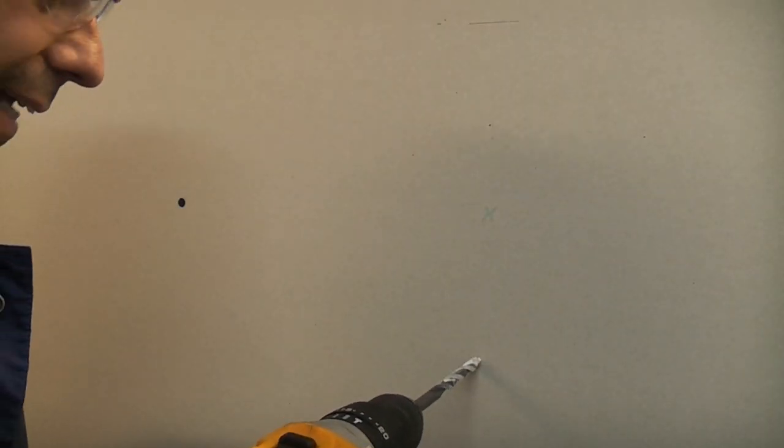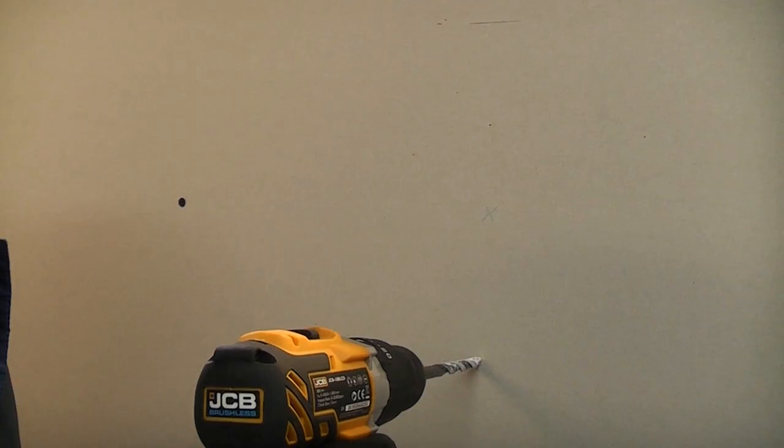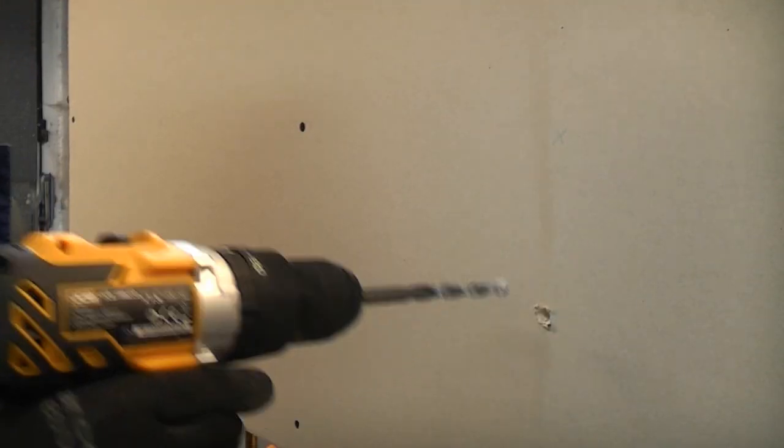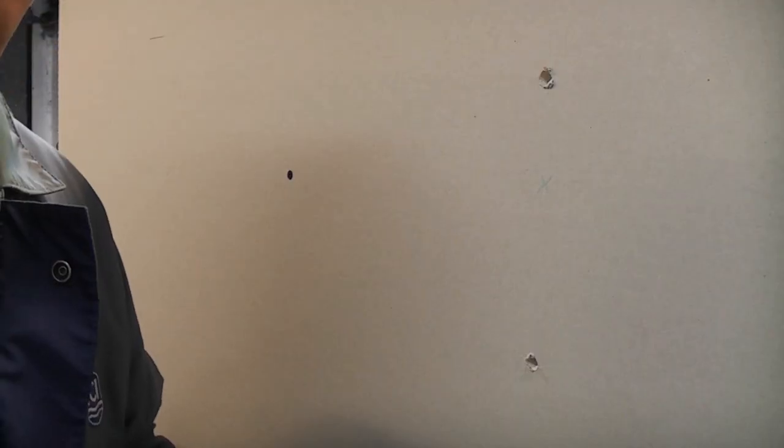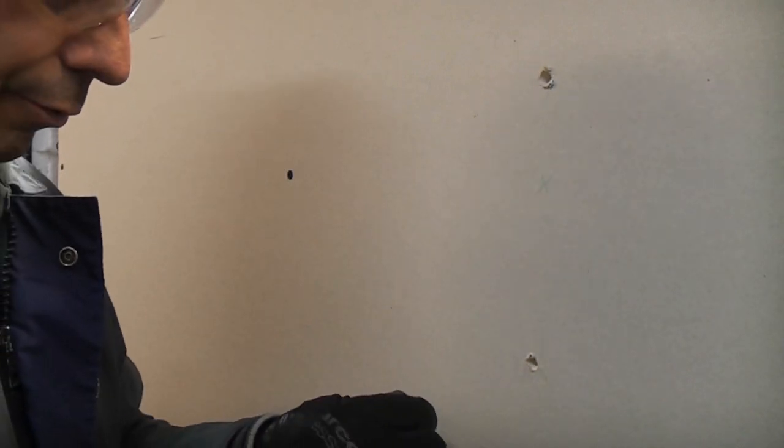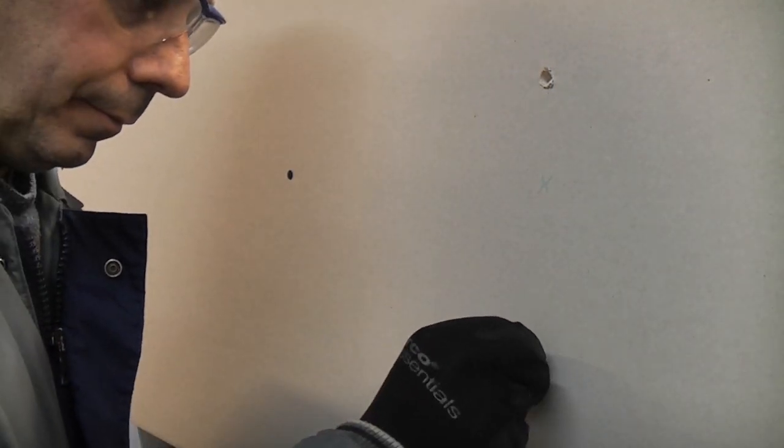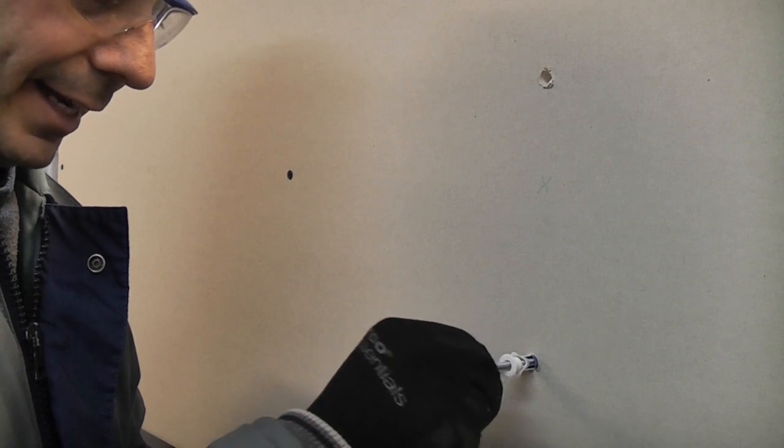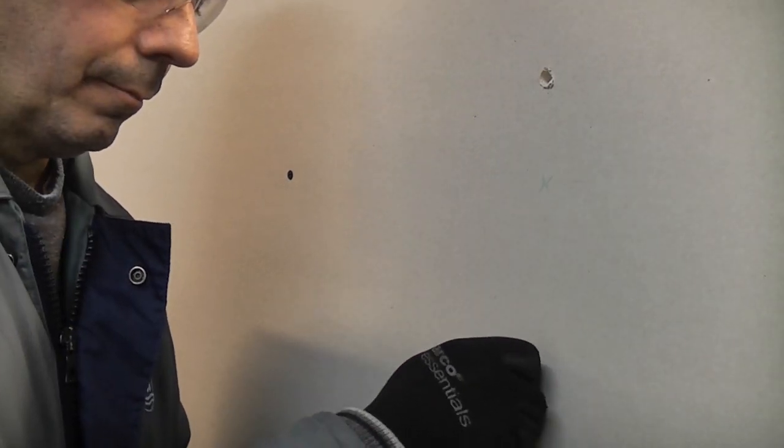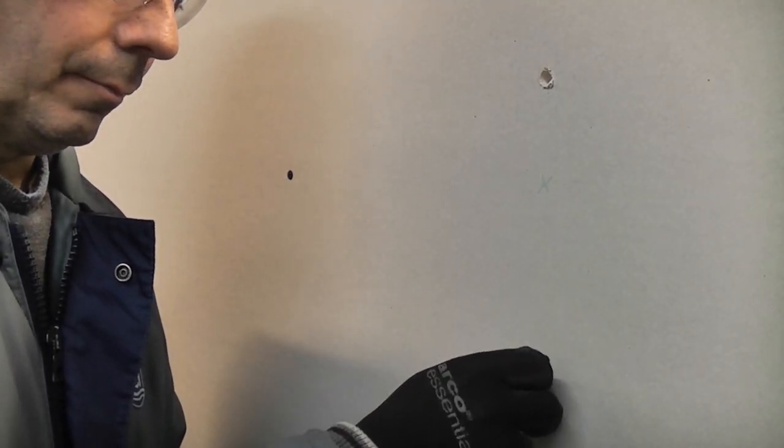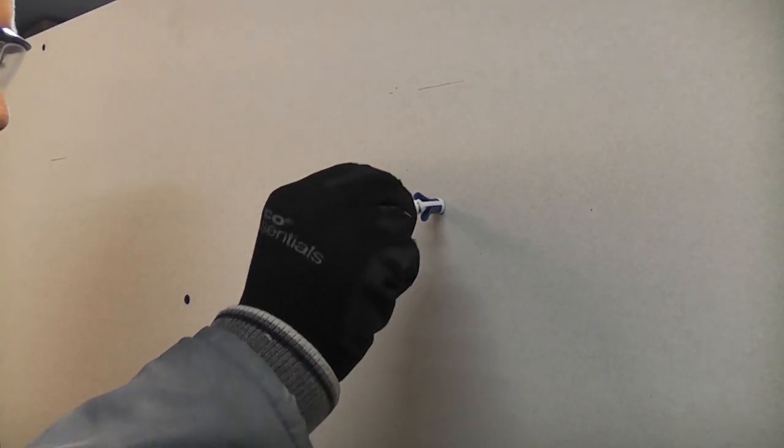I'm now just going to drill through there using a 10mm drill bit, and then we just need to take that part, push that through the hole. Might actually just need to put the screw in to get it through. I'll now do the same with the top one.